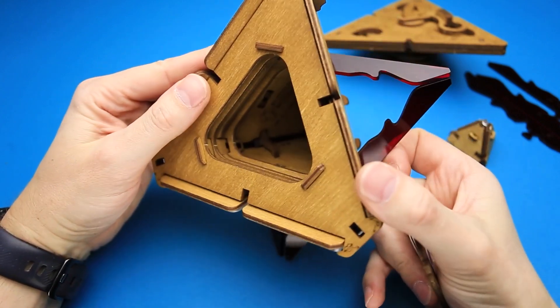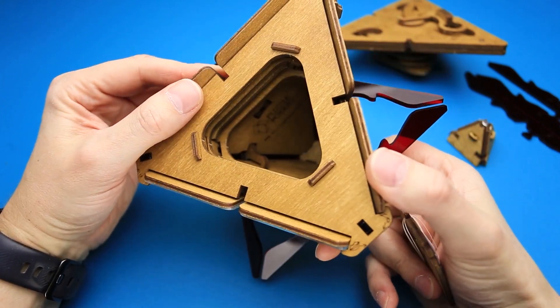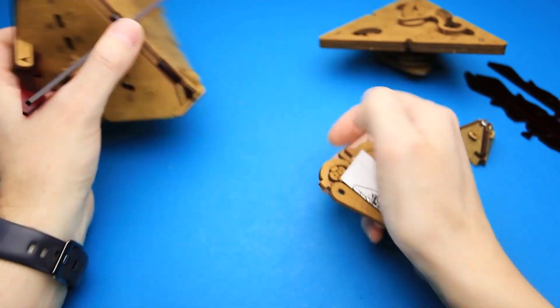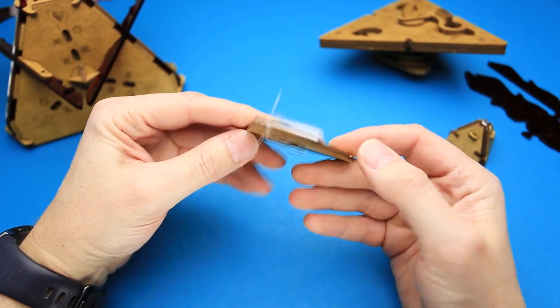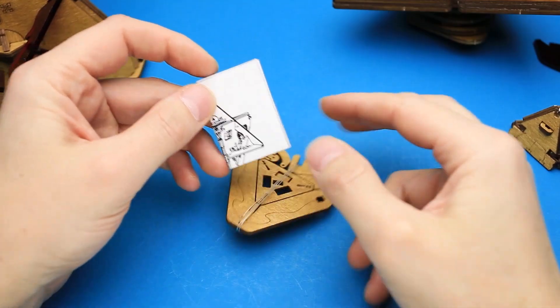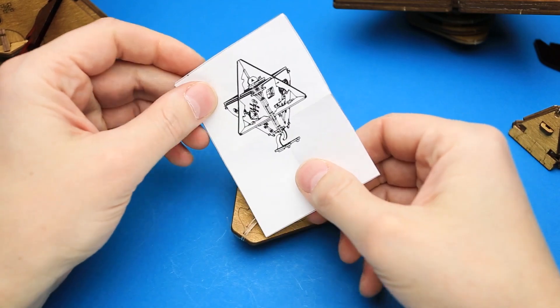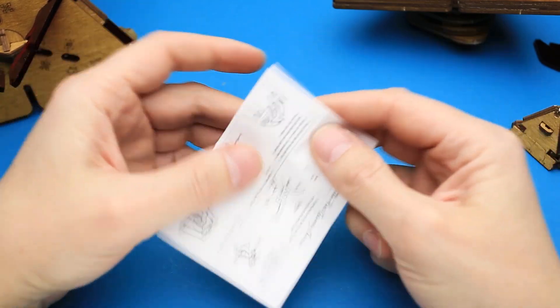What do we have inside? It says puzzle potato and the website puzzle potato.com. Also, we have some kind of a small puzzle here. Let's try to solve it. I guess it will be some kind of a stand for the puzzle. Let's see. Yeah, it is a stand. There is a small instruction how to make it.